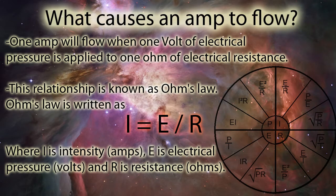What causes an amp to flow? One amp of flow occurs when one volt of electrical pressure is applied to one ohm of resistance. This relationship is known as Ohm's law, written as I equals E divided by R, where I is intensity in amps, E is electrical pressure in volts, and R is electrical resistance in ohms.